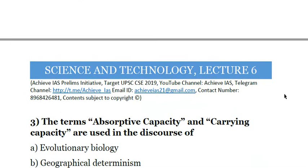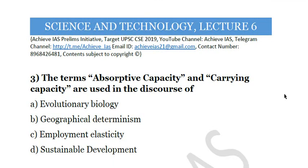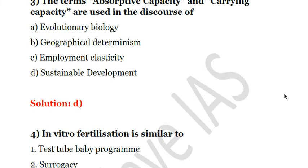Third question: the terms 'absorptive capacity' and 'carrying capacity' are used in the discourse of — A. Evolutionary biology, B. Geographical determinism, C. Employment elasticity, D. Sustainable development. The answer is D, sustainable development. Absorptive capacity is basically the capacity of the ecosystem to absorb the exploitation of resources, and carrying capacity is the ability to bear consumption of resources so that it can regenerate those resources. That's why life on earth remains sustainable. Solution is D.